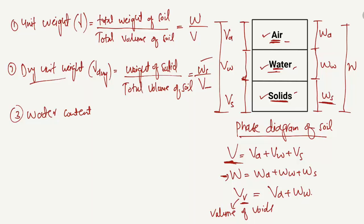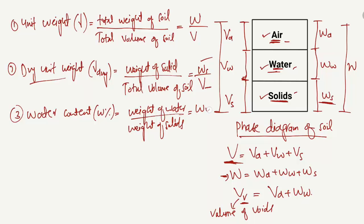The third one is the water content of the soil. Water content is represented by small w, expressed as a percentage. It is equal to the weight of water (WW) divided by the weight of solids (WS), so w = WW / WS. This is known as the water content. The fourth one is the void ratio.